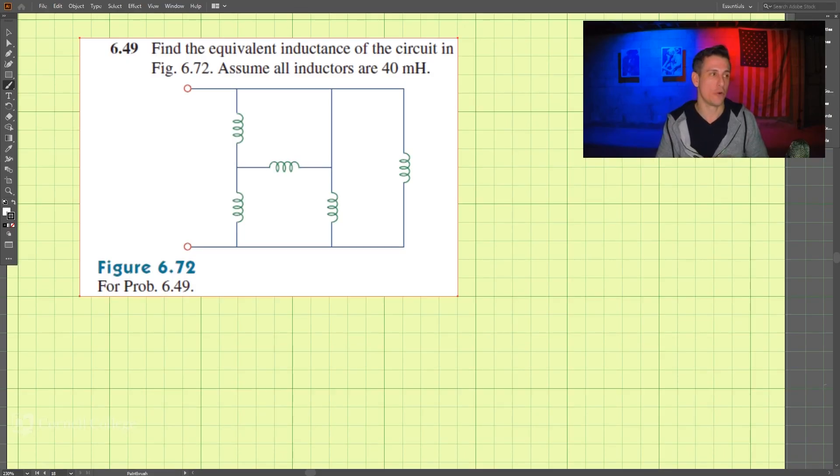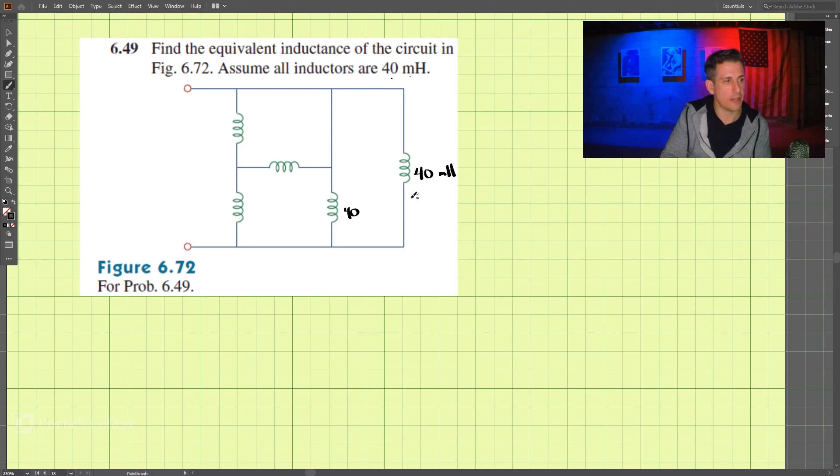This is problem 6.49 and we're to find the equivalent inductance of this circuit. Assume all inductors are 40 millihenry. So these are all 40 here, 40, 40, and these are all millihenry. 40 and 40 and 40.